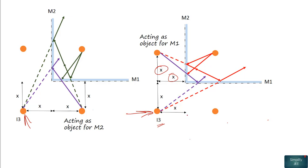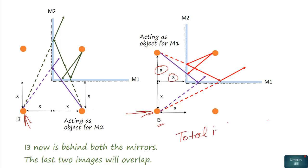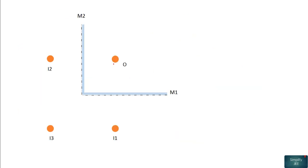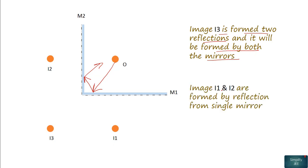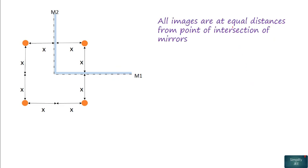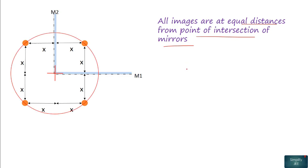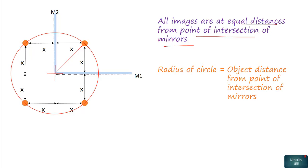Now I3 is behind both the mirrors, so it will never act as an object for any of these mirrors. The total number of images formed is 3. Image I3 is formed by two reflections and by both the mirrors, while I1 and I2 are each formed by a single reflection from a single mirror. The object and all images are at equal distances from the point of intersection of the mirrors. If we draw a circle centered at this intersection point, it passes through the object and all images. The radius of this circle equals the object distance from the intersection point, which is √(X² + X²) = √2 · X.